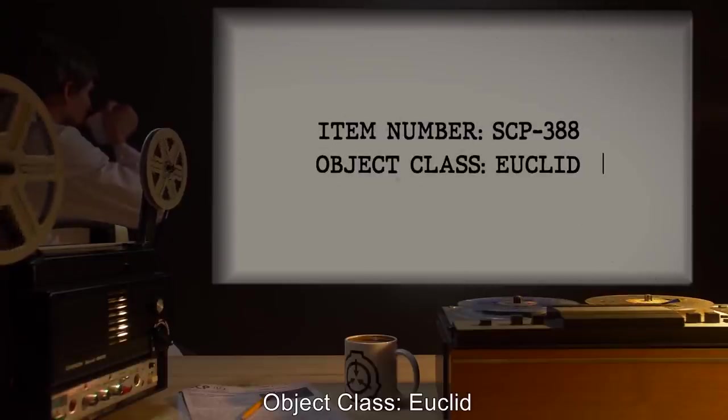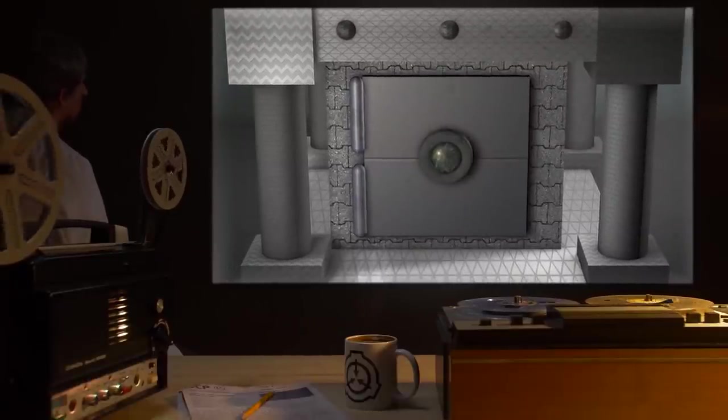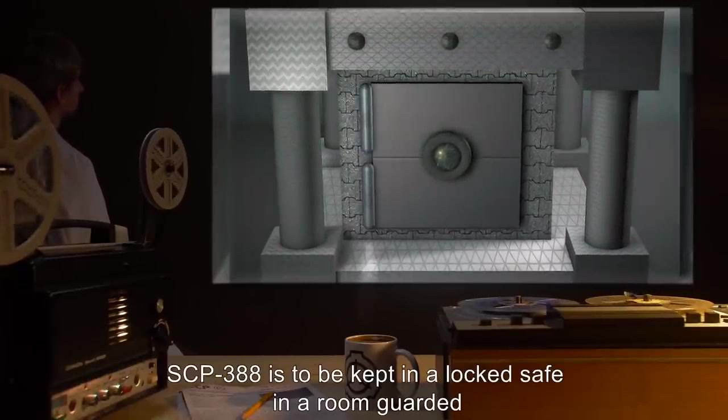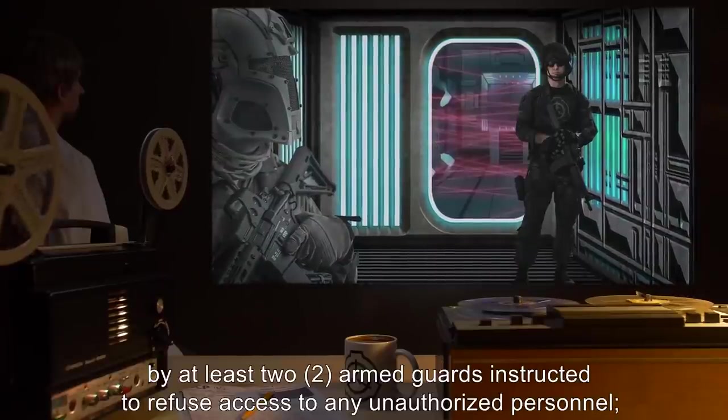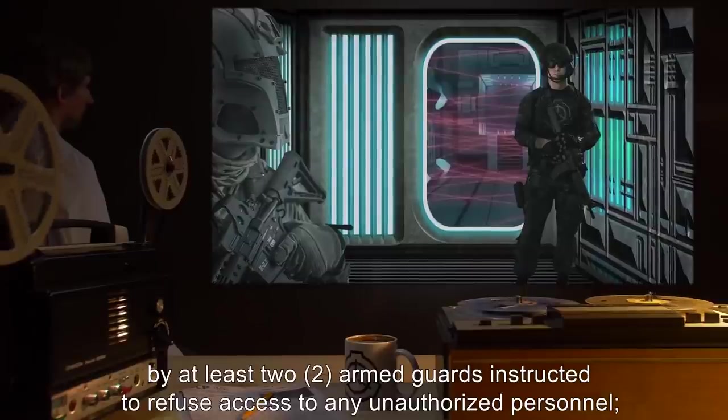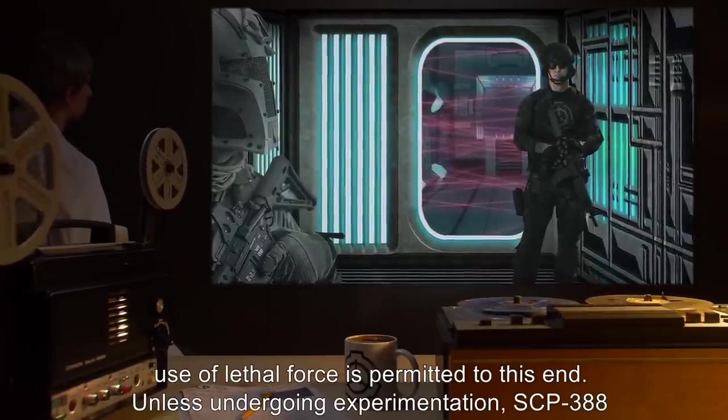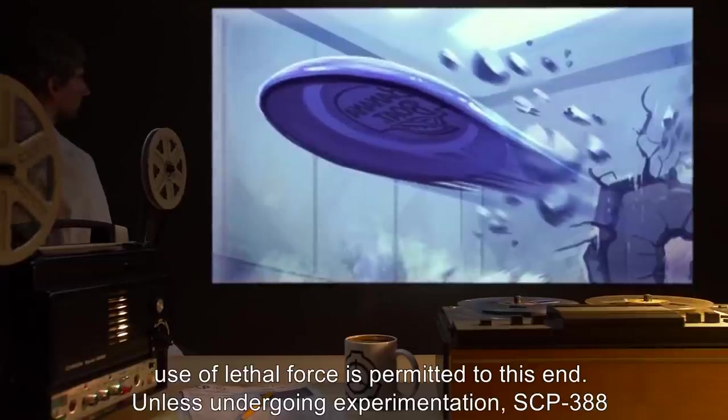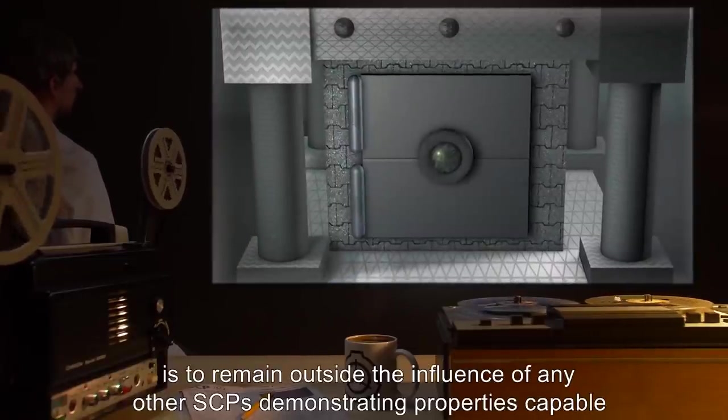Item number SCP-388, Object Class Euclid. Special Containment Procedures: SCP-388 is to be kept in a locked safe in a room guarded by at least two armed guards instructed to refuse access to any unauthorized personnel. Use of lethal force is permitted to this end.